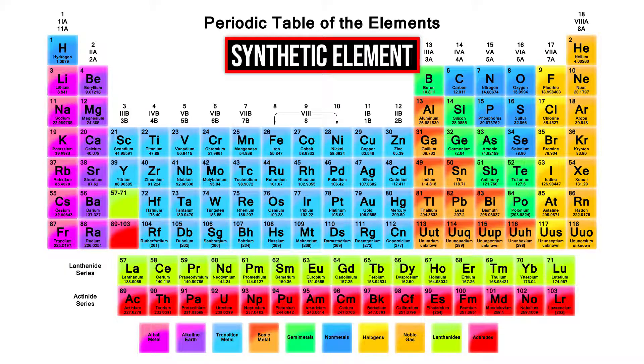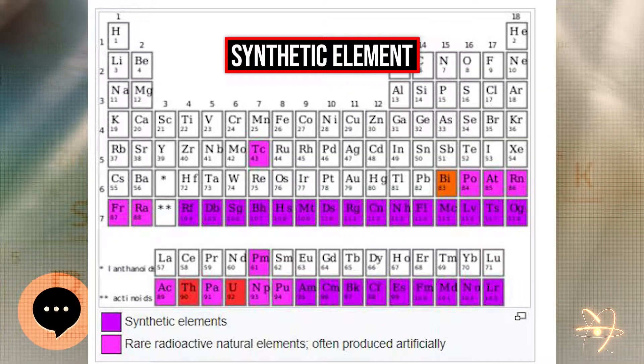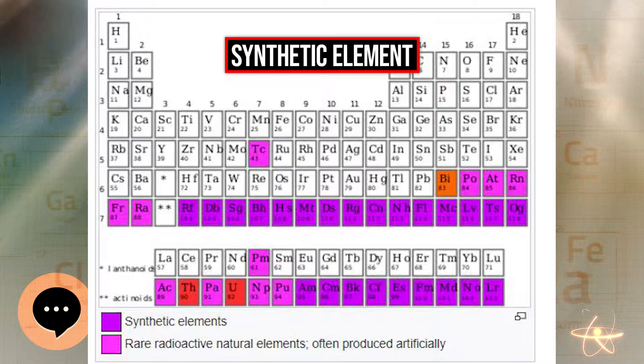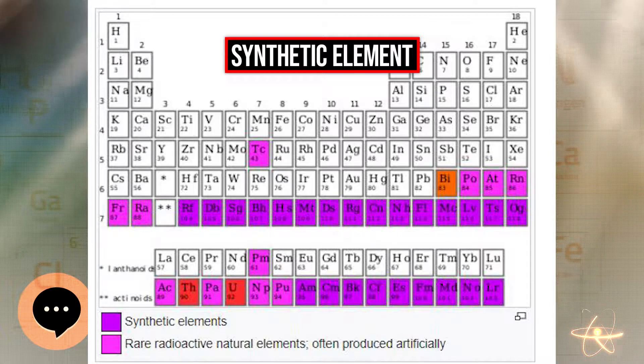The following elements do not occur naturally on Earth. All are transuranium elements and have atomic numbers of 95 and higher. All elements with atomic numbers 1 through 94 are naturally occurring, at least in trace quantities.